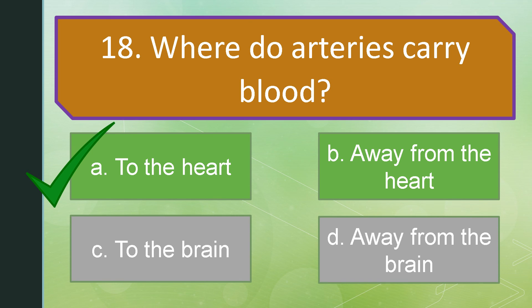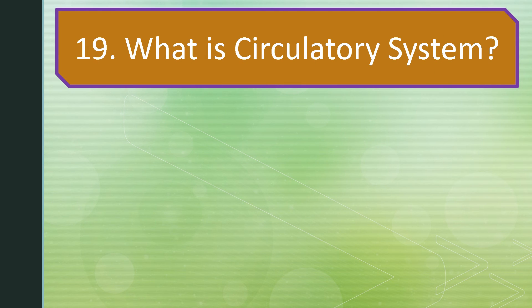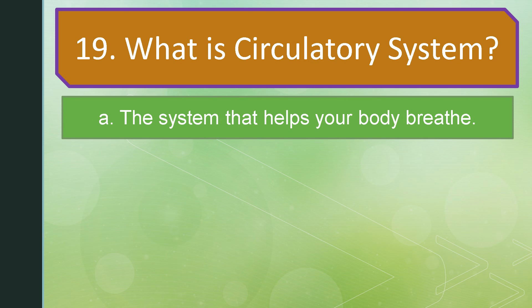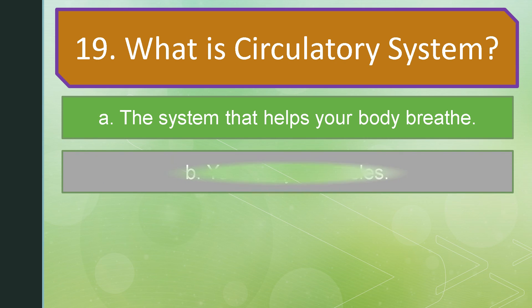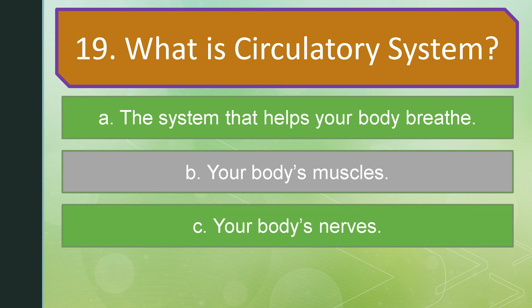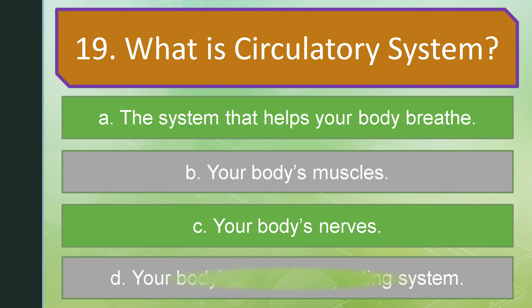Number 19. What is the circulatory system? Is it A: The system that helps your body to breathe. Letter B: Your body's muscle. Letter C: Your body's nerves. Or letter D: Your body's blood transporting system. The correct answer is letter D: Your body's blood transporting system.